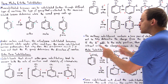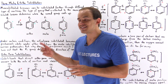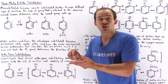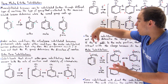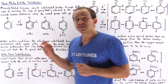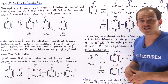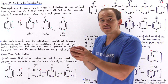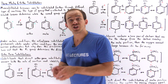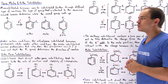Generally, the meta substitution product predominates when the substituent contains an atom with a full or partial positive charge. However, if the atom attached to the first carbon has a lone pair of electrons that it can use to delocalize charge and create an additional pi bond, then the ortho-para substitution reaction will predominate.